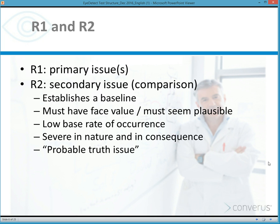There is always a secondary issue in every iDetect test, which is a comparison issue. It essentially helps establish a baseline in terms of the reaction of the examinee to a target behavior of concern. The R2 issue is a serious crime with a very low base rate of occurrence, which should have face validity to the examinee — they must believe the organization cares about the issue. Called the probable truth issue by polygraph examiners, very few examinees will have actually participated in the behavior.